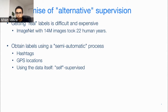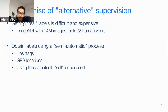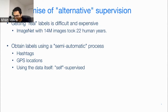On the other hand, if you look at semi-automatic processes — for example, hashtags, GPS locations, or the kinds of supervision we'll talk about today — these are actually much more scalable and easy to obtain at a larger scale. So let's start with a thought experiment: can we get labels for all the data that we have?